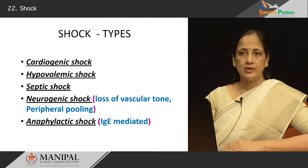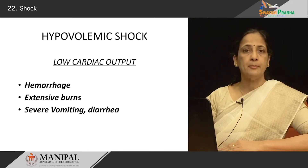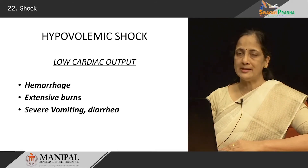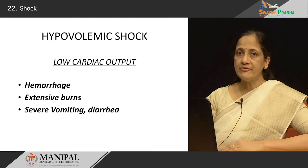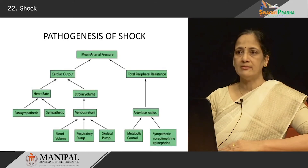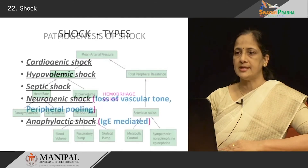The second type of shock is hypovolemic shock. Here again, the main mechanism is low cardiac output. This occurs when a patient has massive hemorrhage — for example, a road traffic accident with serious injuries causing massive blood loss. Patients with extensive burns have a lot of fluid oozing out from the damaged skin surface, resulting in hypovolemia. Patients with severe vomiting and diarrhea due to any cause will all have a net decrease in intravascular fluid volume, leading to low stroke volume, low cardiac output, dropped arterial pressure, and so on through the pathogenic mechanism.